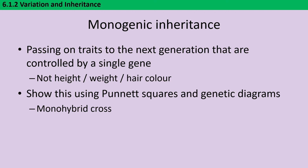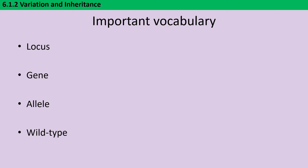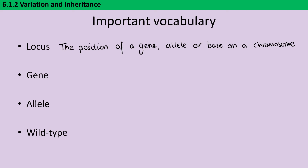We're making a hybrid by crossing two parents, and it's a monohybrid cross because they only differ in that one trait. Before we can start drawing genetic diagrams and looking at more complicated examples of monogenic inheritance, we need to revise some vocabulary and also introduce some new terms. The first new term is locus — some people say locus — which refers to the specific location where we find a gene, an allele, or even an individual base on a chromosome.